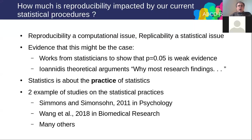How much is reproducibility impacted by our current statistical procedures is really what I'll be focusing on. Reproducibility is often a computational issue — can I recompute things I have computed before? Replicability is more of a statistical issue — if I look at another cohort or some techniques, can I replicate the results? That term is often taken with the notion of a different group of subjects in mind. I'll use reproducibility as the general problem in science of finding again a result that has been found in a previous study, independently of the methods and data.